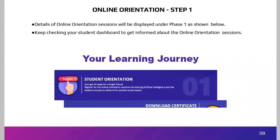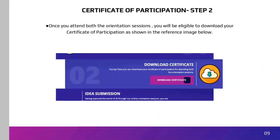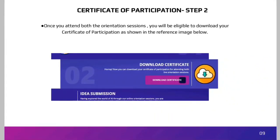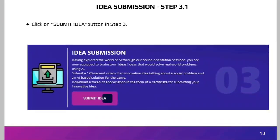In Step 3, click the Submit Idea button. For idea submission, you need to upload a 120-second video of an innovative idea addressing a social problem and proposing an AI-based solution. Click Submit Idea, enter the required details in the idea submission form, then click Submit. Note that once submitted, you will not be able to edit that entry again.